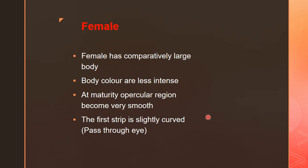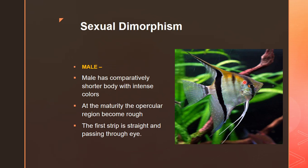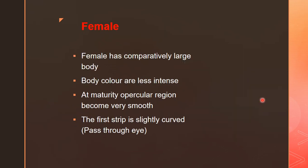Next, we look at the female. The female has a large body — as already stated, in aquarium fishes the male is smaller and the female is larger. The female's body color is less intense, whereas the male has high, varied color. At maturity, the operculum region in the female becomes smooth, while in the male it becomes rough. In the female, the stripe is slightly curved — C-shaped — passing through the eye, whereas in the male it is straight. These are the differences between male and female in terms of sexual dimorphism.